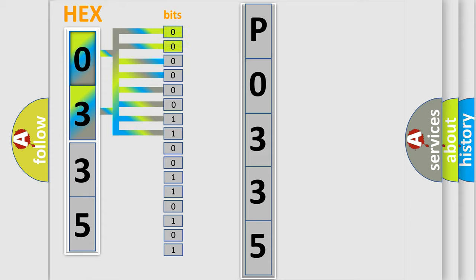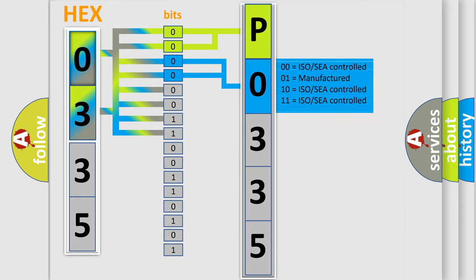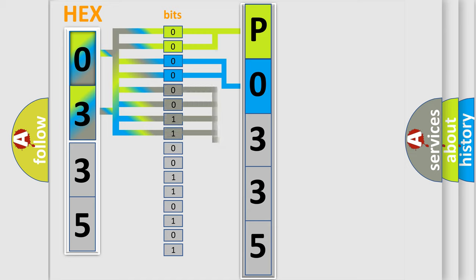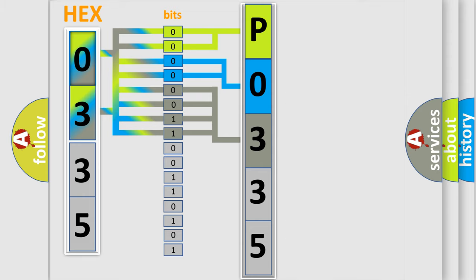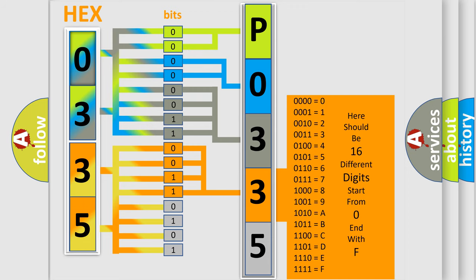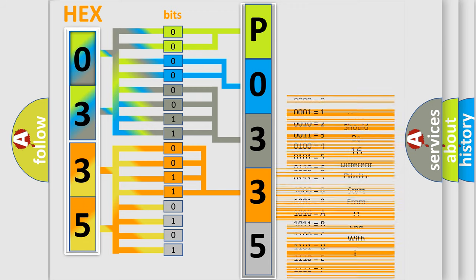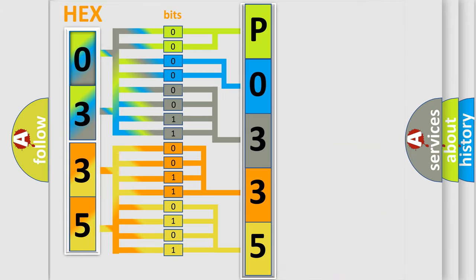By combining the first two bits, the basic character of the error code is expressed. The next two bits determine the second character. The last bits of the first byte define the third character of the code. The second byte is composed of a combination of eight bits. The first four bits determine the fourth character, and the last four bits define the fifth character. A single byte conceals 256 possible combinations. We now know how the diagnostic tool translates received information into a more comprehensible format.